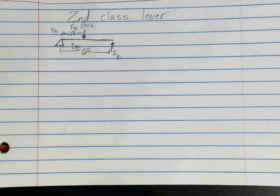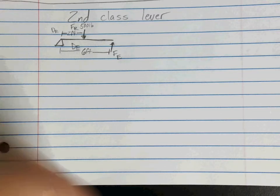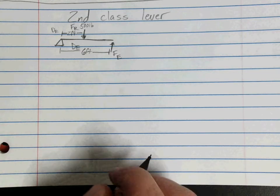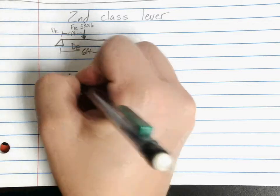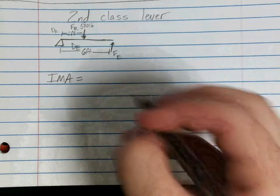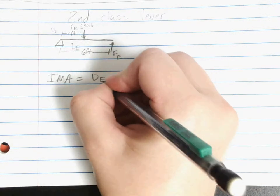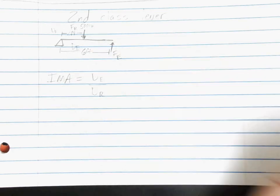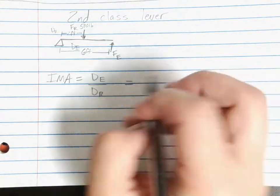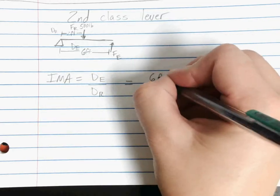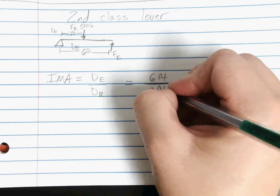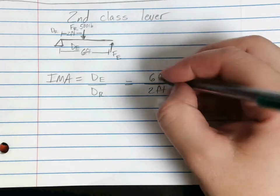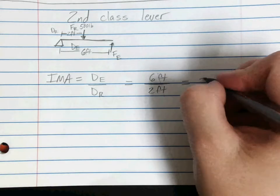So what we're going to do first for this, we're actually going to find our IMA. We want to find our ideal mechanical advantage, so what it would be ideally if we were in a world without friction. Our IMA is going to be our DE divided by our DR, both of which we know. Our DE was six feet, our DR was two feet. Remember, use those units. Our feet will cancel in this case, and we're left with three.